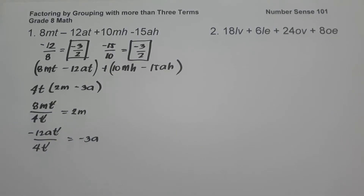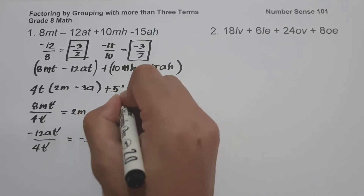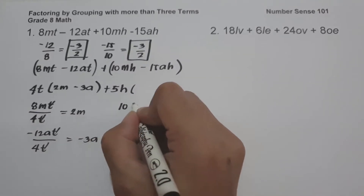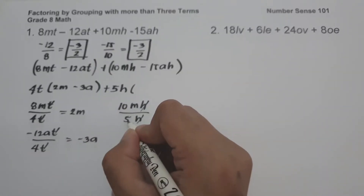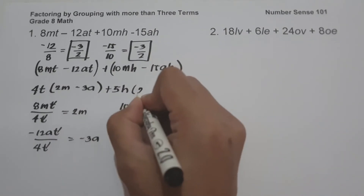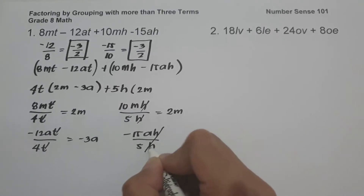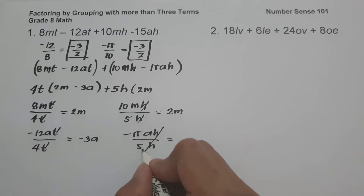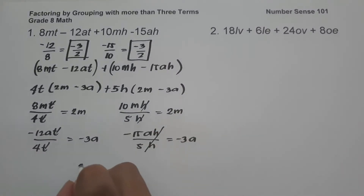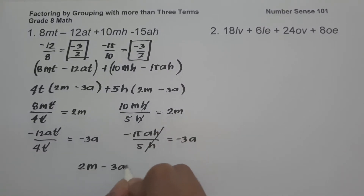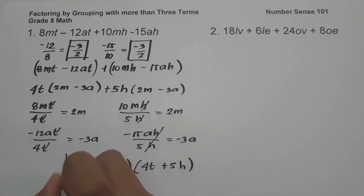On the other side, the greatest common factor of 10mh and negative 15ah is 5h. So 10mh divided by 5h: cancel h, 10m divided by 5 gives 2m. Then negative 15ah divided by 5h gives negative 3a. Therefore, the answer is (2m minus 3a) times the quantity (4t plus 5h).